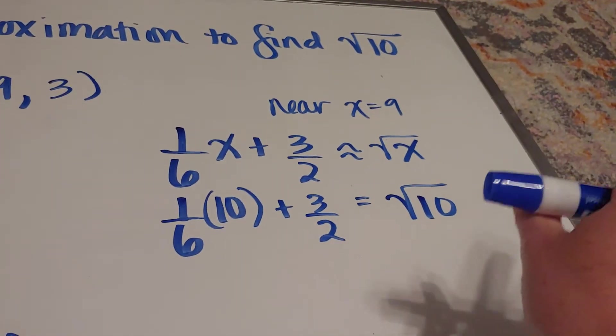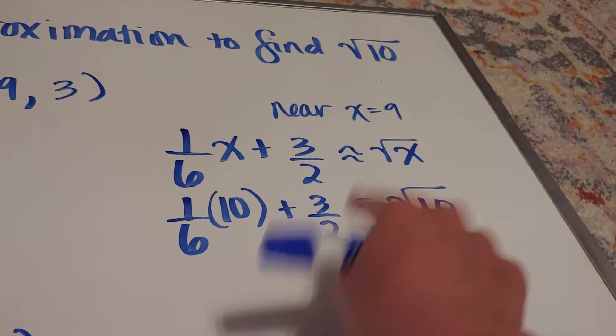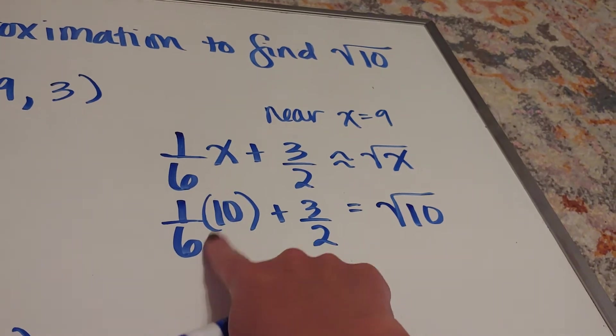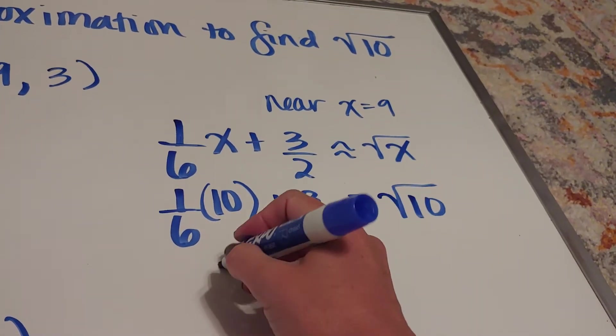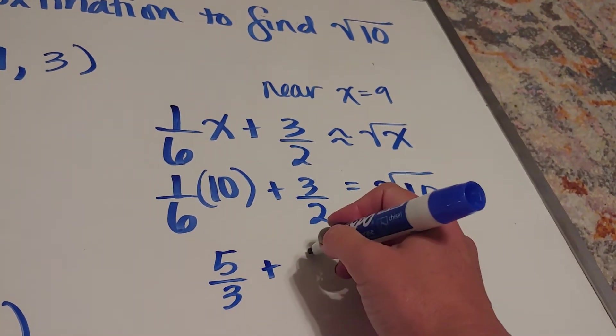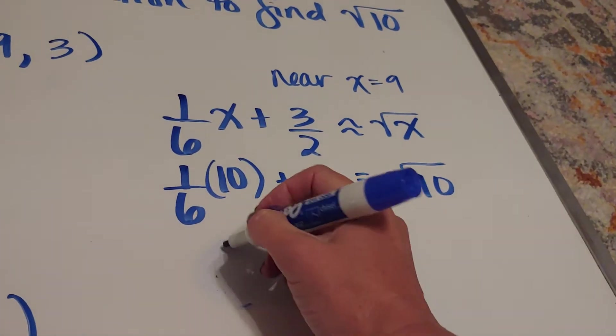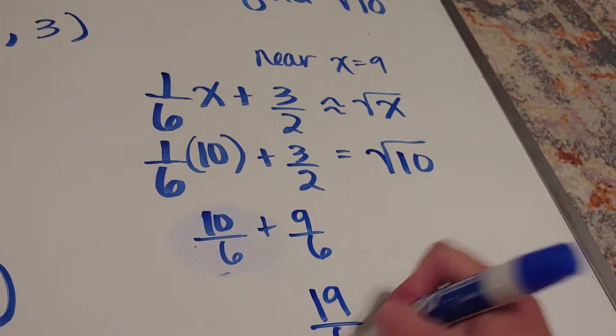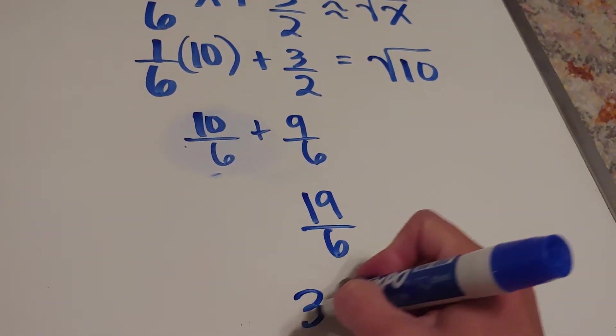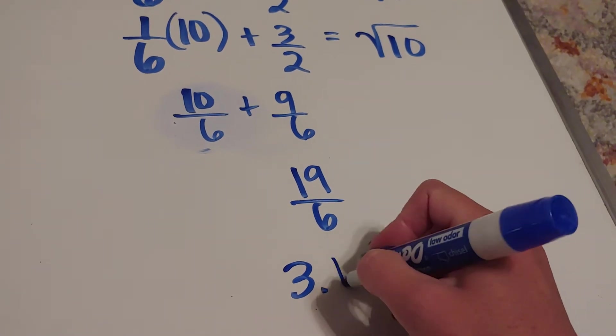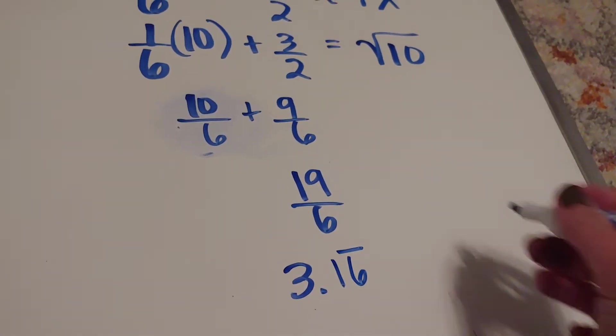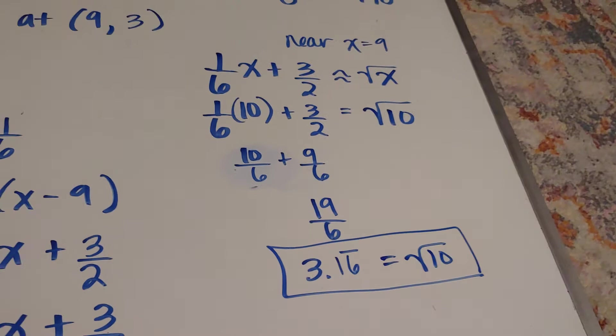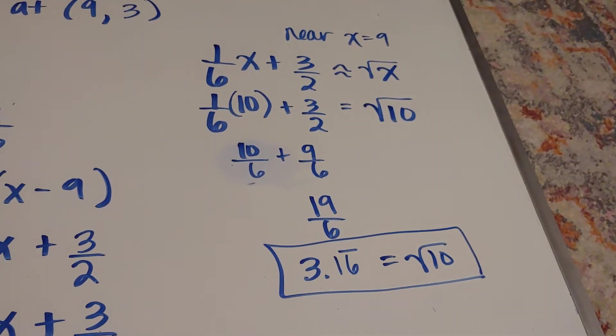10 over 6 is the same thing as five thirds. Actually, let's leave it as 10 over 6 and let's call this 9 over 6. So this would be the same thing as 19 over 6, which is the same thing as three and one sixth, which is 3.16 repeating. So that's what the square root of 10 equals. So in a book of values, it would have had the square root of 10 is approximately 3.16 repeating.